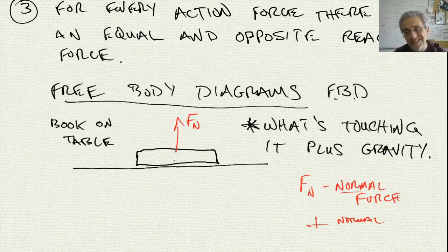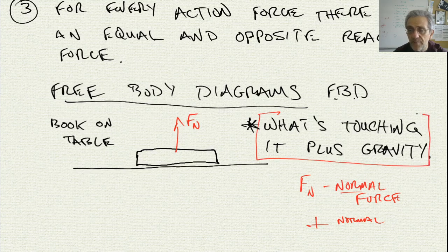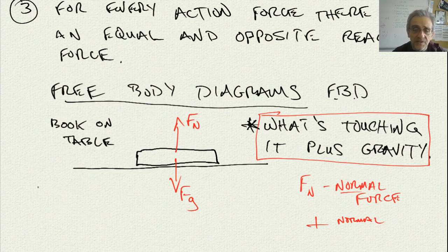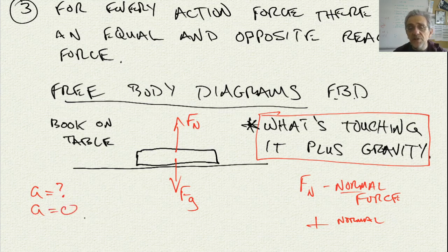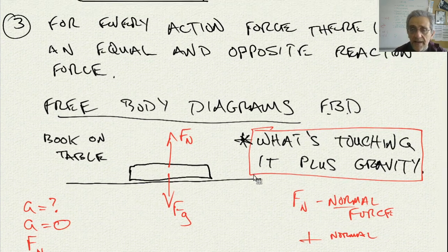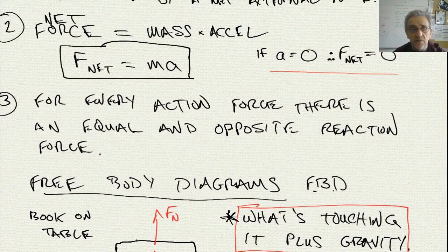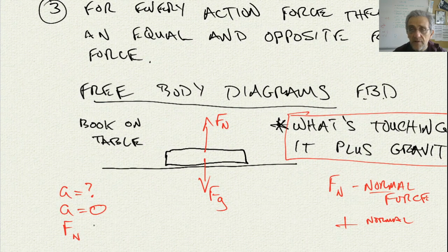That normal force is being applied by the table on the book, directed upward. That's the only thing touching the book. Now for the 'plus gravity' part — we write gravity as F_g. Is the book accelerating? The book is at rest, so its acceleration is zero. If the acceleration of the book is zero, then the net force must be zero, because of the second law.